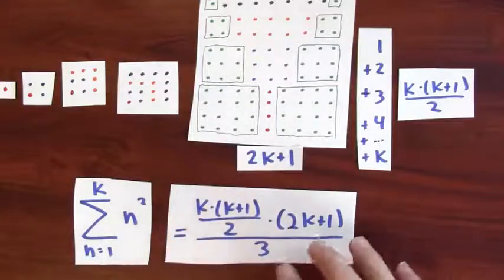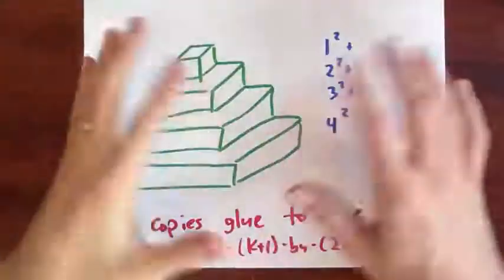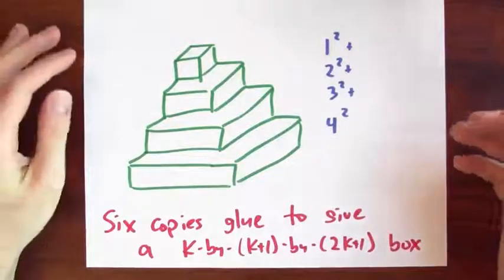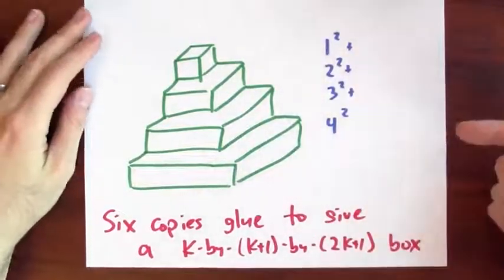There are other geometric arguments as well, other proofs by picture that you could give. And there are other geometric arguments too. Here's another way to get at this sum of squares formula.